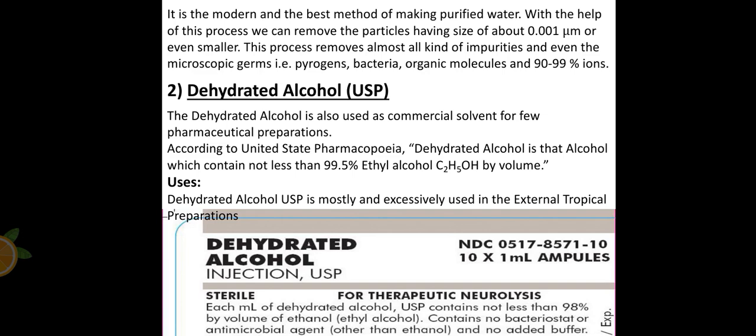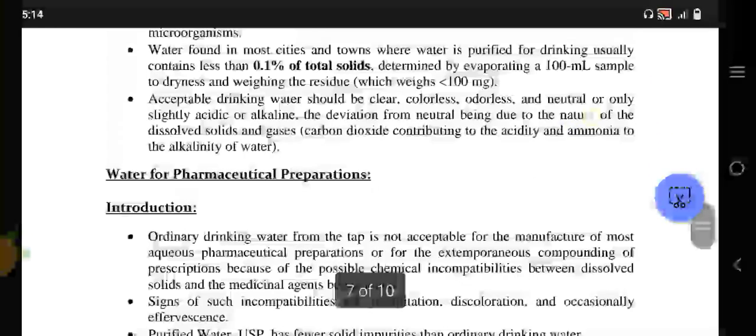We're also going to discuss simple water. The simple water contains impurities such as dissolved inorganic salts: sodium, potassium, calcium, magnesium, iron, chlorides, sulfates, bicarbonates. These are all dissolved and undissolved organic matter. It also contains small amounts of microorganisms, protozoa, bacteria, and some fungi. The water that is usually found contains 0.1% of solids and it is acceptable for drinking because it's clear, colorless, odorless, neutral, and can be slightly acidic or alkaline but mostly neutral. That's why we do not use normal water.